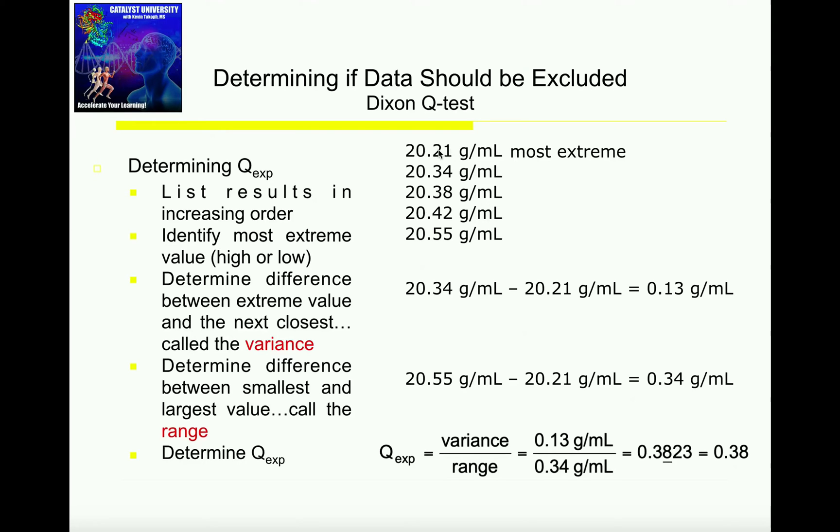You can also repeat the Dixon Q-test to see if you can throw out any other points. Let's repeat it again, just to see if we can now throw out 20.21. Since we've already thrown out the 19.00, it no longer appears. Now we only have five data points. Again, these are still in order. The variance is just the difference between the extreme value and the value right next to it, so that's 20.34 minus 20.21. I get a variance of 0.13. Now the range is the high value minus the low value, 20.55 minus 20.21. I get a range of 0.34.